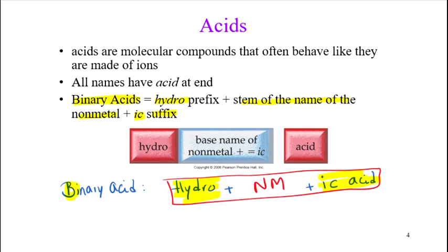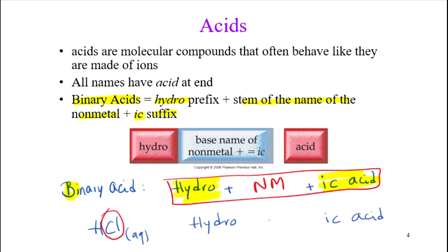Example: HCl (aq). I write hydro, I write -ic acid, and the name of the non-metal. The non-metal is chlorine. Here we use the root or stem, so we call that hydrochloric acid. The name of this compound is hydrochloric acid.